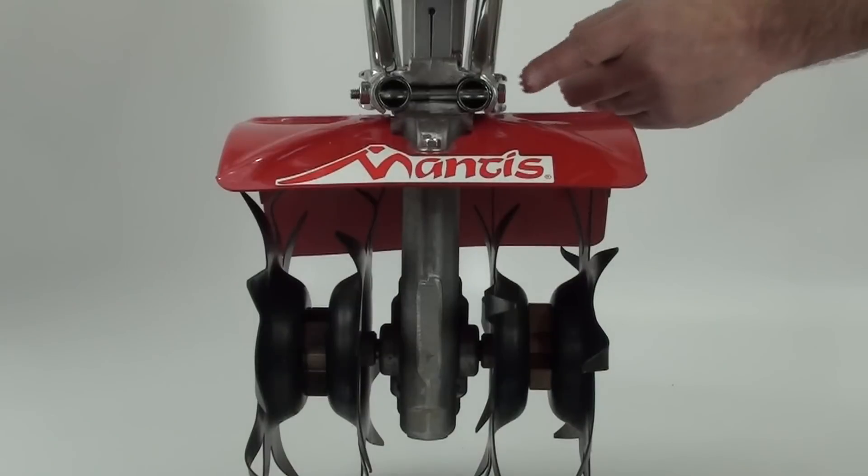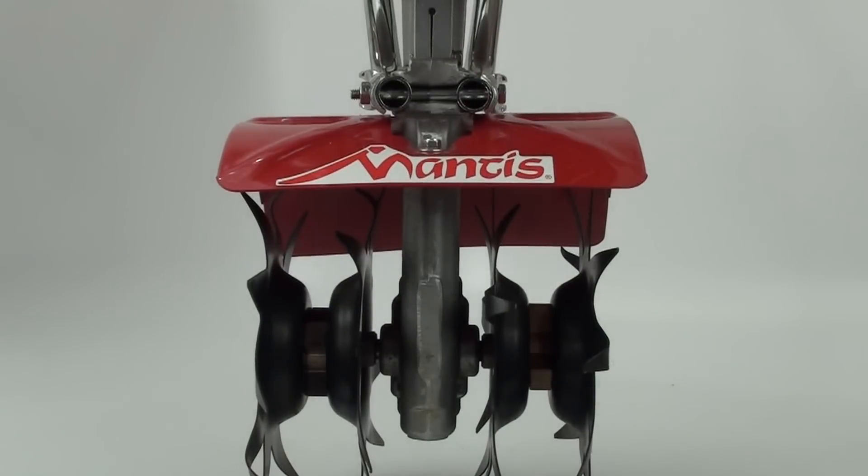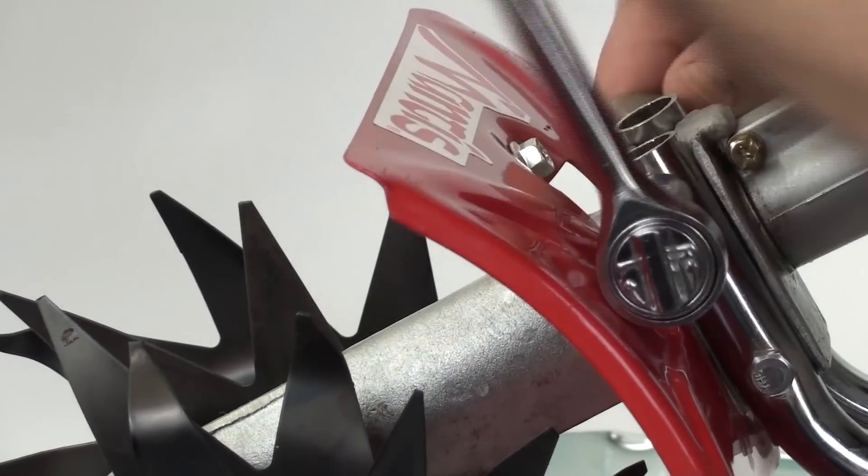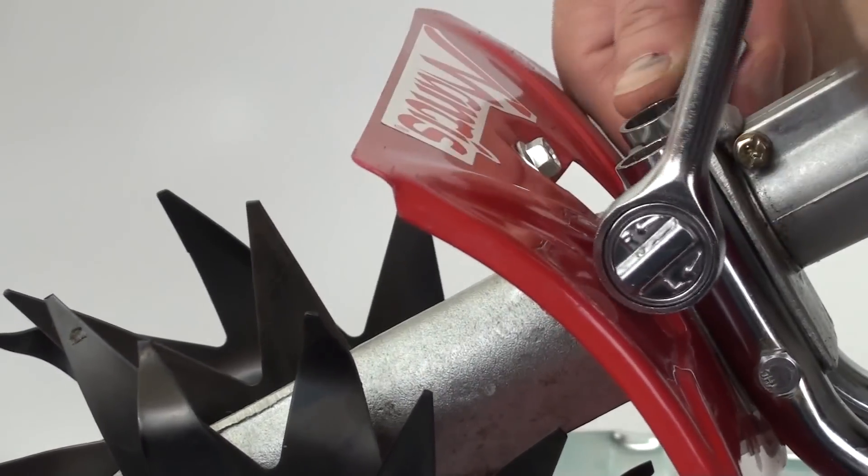Then you will remove the nuts, bolts and plates that secure the tiller handles to the transmission. Be careful not to let the handlebars fall to the ground once loosened.